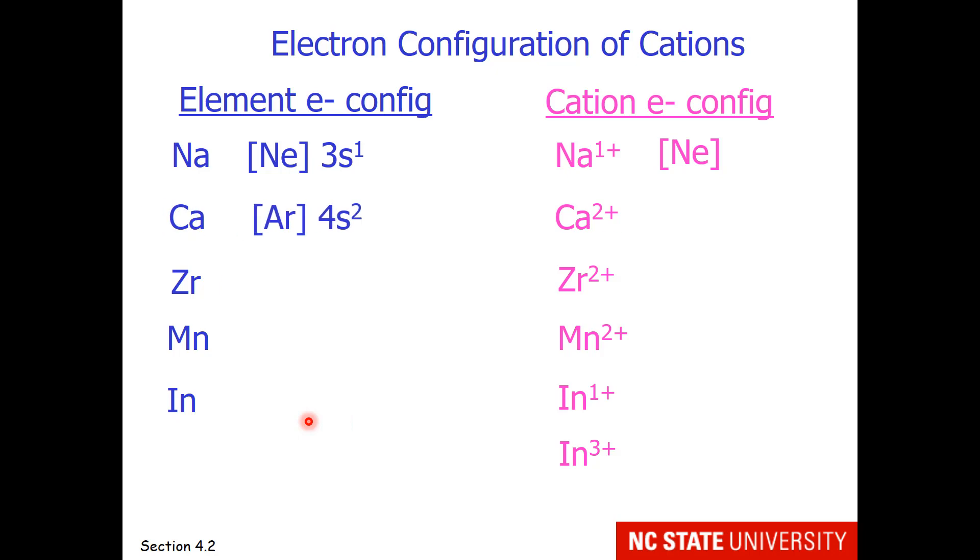Calcium has two valence electrons, so when we remove those, the electron configuration is argon.